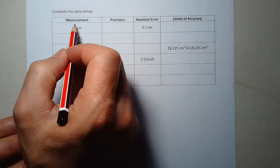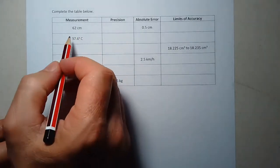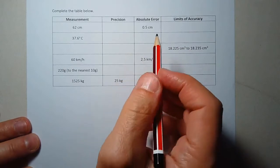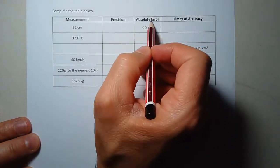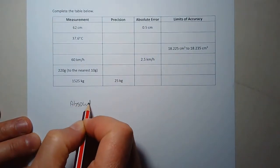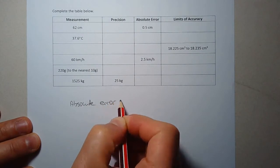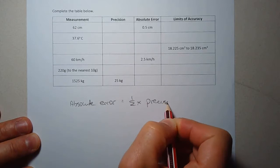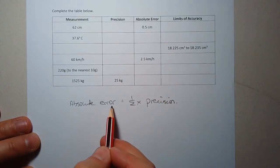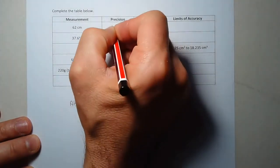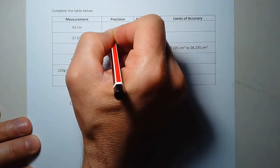Let's look at the first row. We're given the measurement 62 centimeters. We're also given that the absolute error is 0.5 centimeters. Now, if you recall, absolute error is half the precision. I might just write that down here. So absolute error is equal to half times the precision. So if the absolute error is half, the precision must be double that. So the precision is one centimeter.